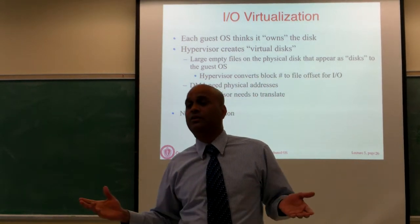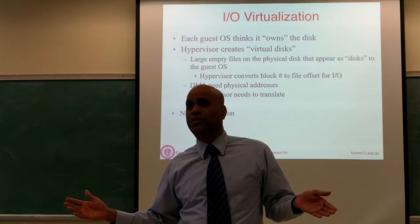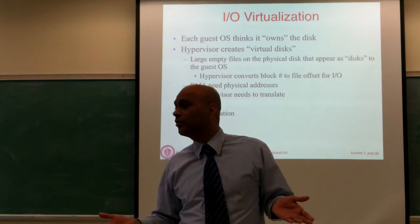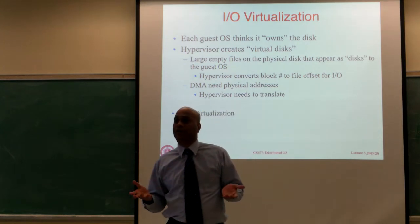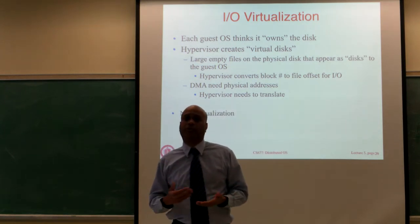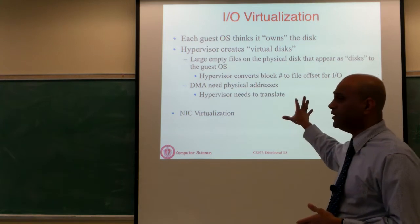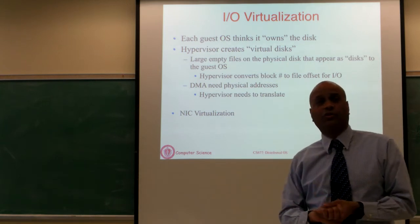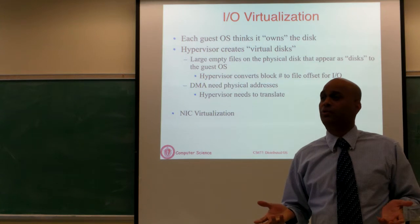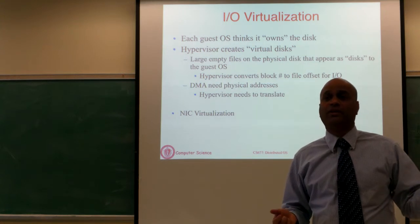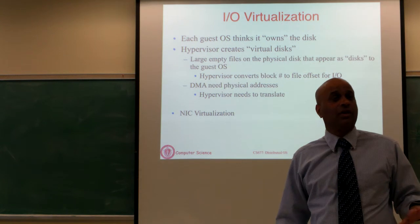A disk is a collection of bits, and a file is a collection of bits. So you can easily make a file look like a disk by just reading or writing to it and pretending that it was actually a disk. Essentially there's this notion of virtual disks that you use in the hypervisor to present the illusion to the OS and the application as if that were a real disk.